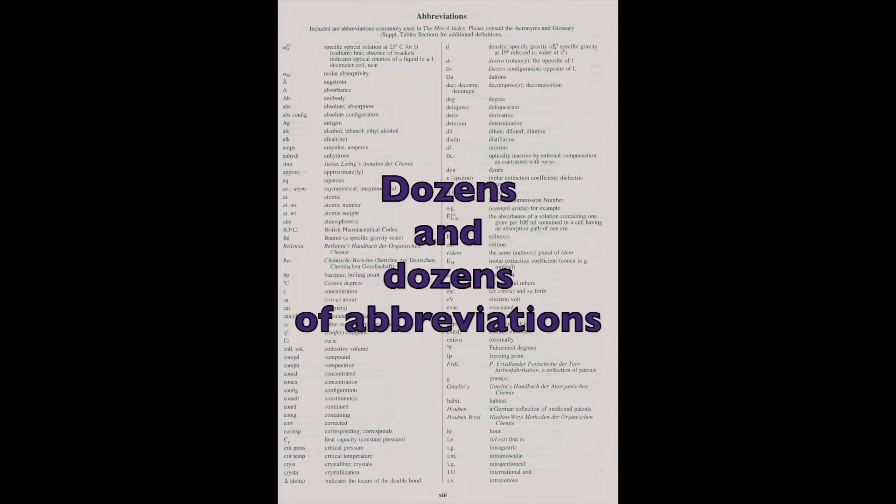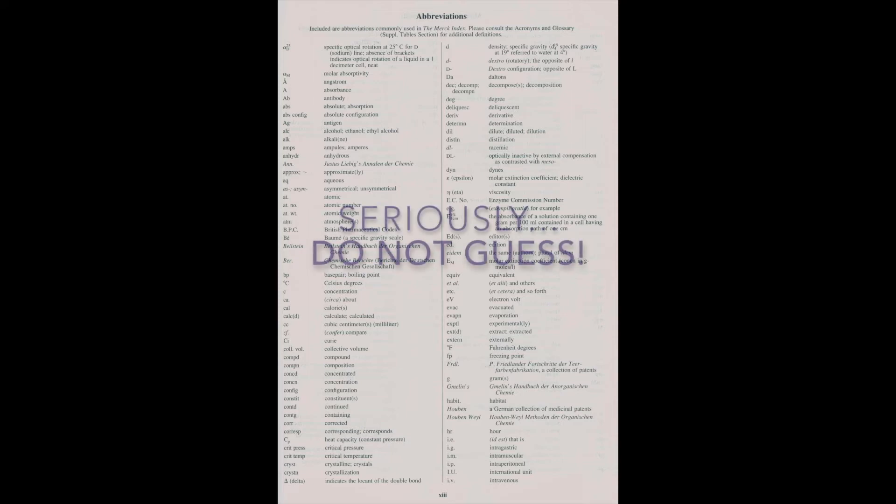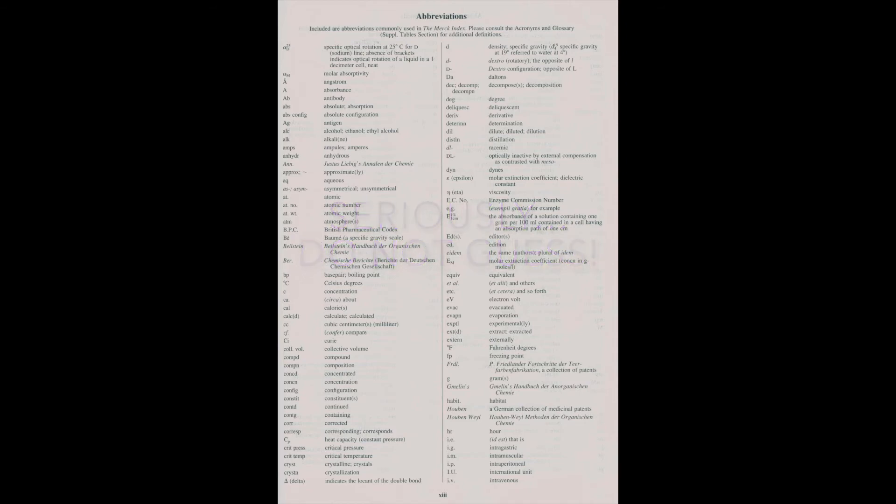Immediately following the explanatory notes section is a list of abbreviations used within the Merck. This list will help you determine the physical properties of your compound as reported in the Merck, and it contains almost 200 abbreviations. If you look closely, you will see that some abbreviations are very similar. My best advice for using the Merck is: do not guess what abbreviations mean, but use this table to understand the data that is reported. Guessing can result in reporting erroneous data in a lab report, among other undesirable outcomes.